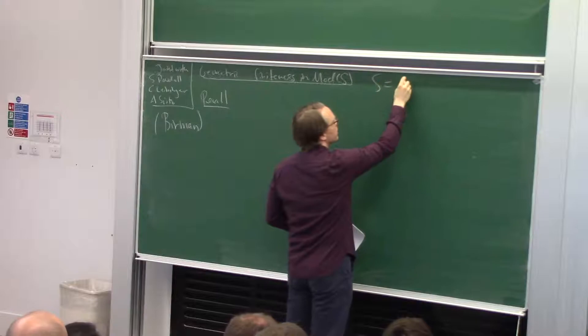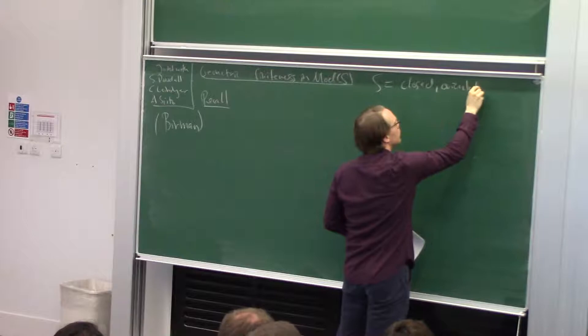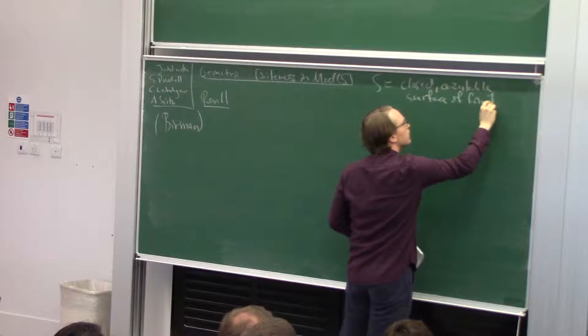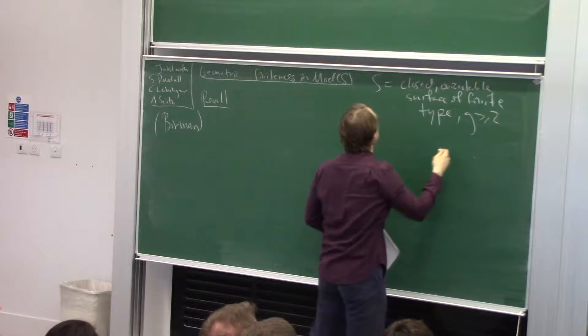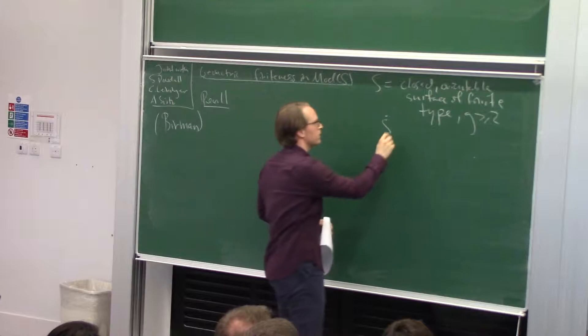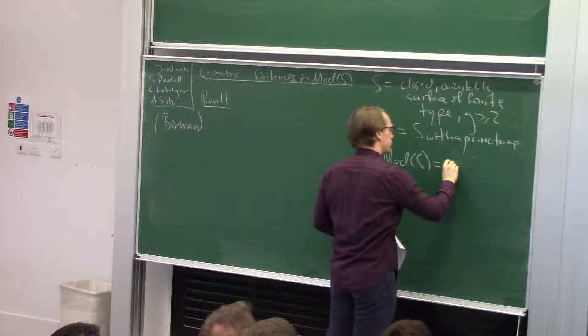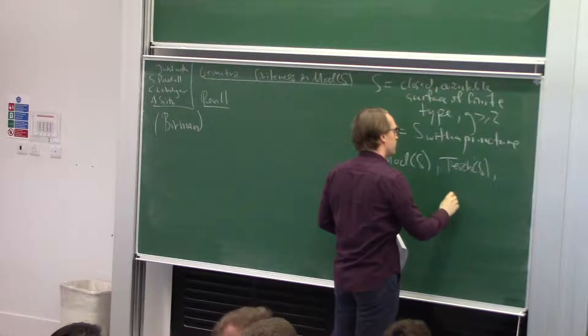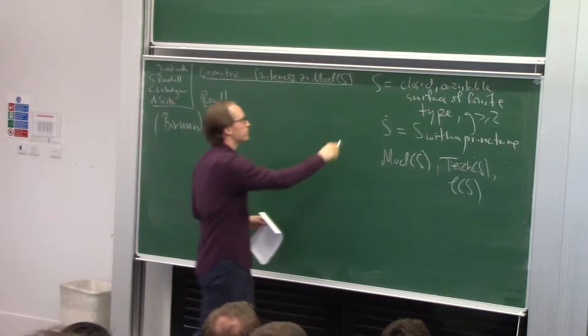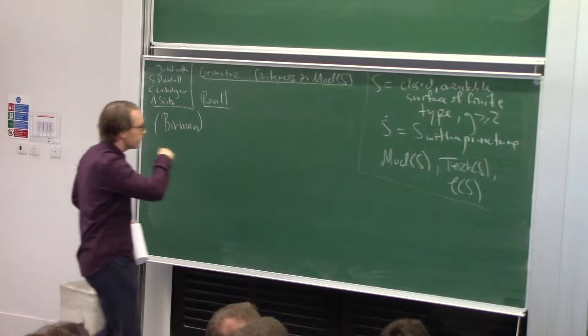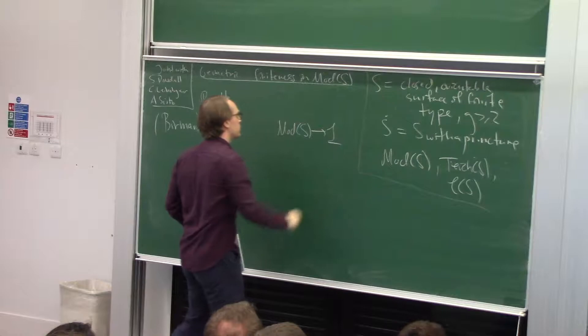I should set up some notation. S is always going to be a closed orientable surface of finite type, and I want the genus to be at least two. If I want to add a puncture, this would be a puncture or a marked point. So this will be the mapping class group, and the curve graph, which we've heard a lot about. This is a nice sort of bundle for mapping class groups.